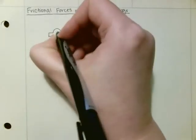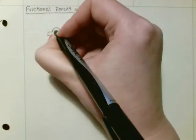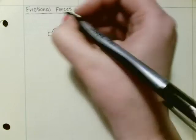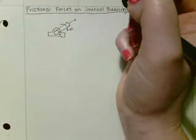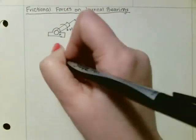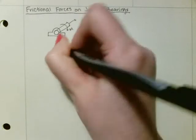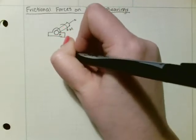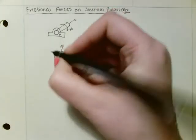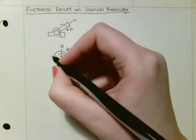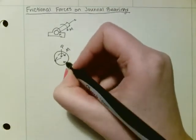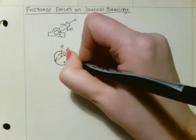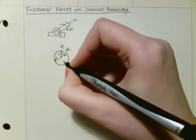If we had a journal bearing, the point right here is point A. If we were to analyze the forces on our shaft, we would have the axial force P, the moment M, the radius R, and then right here at point A we would have our reaction force, which is a combination of our normal force and our frictional force.